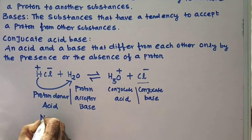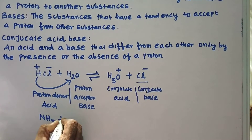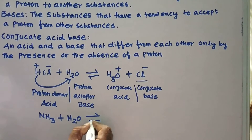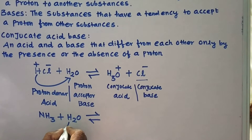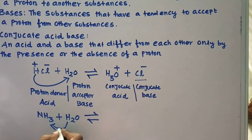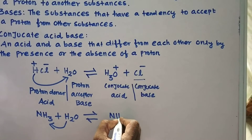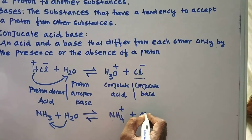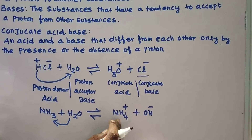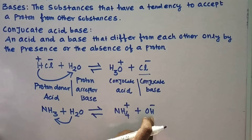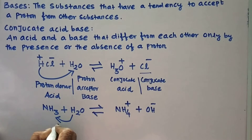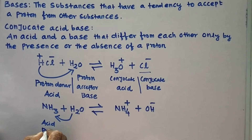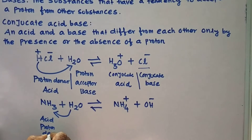Let us consider another example: ammonia. When ammonia is dissolved in water, it accepts a proton from the water. As a result, it forms NH₄⁺, the ammonium ion, and the remaining OH⁻ ion. Here, ammonia acts as a proton acceptor.